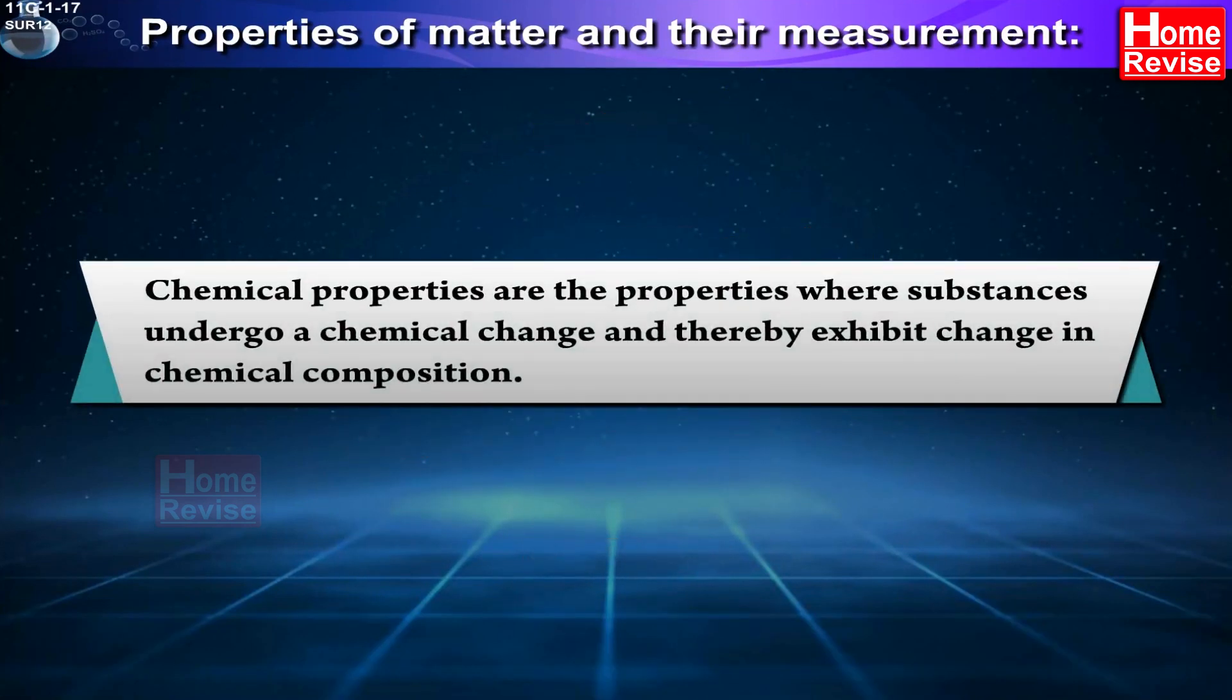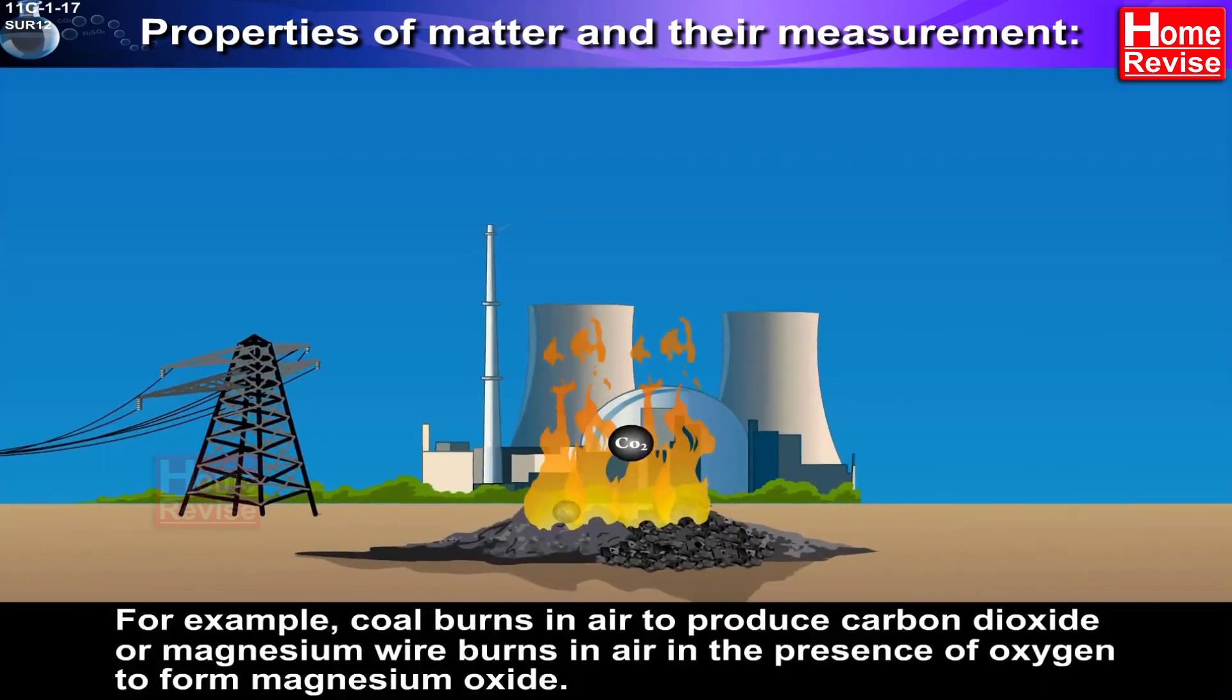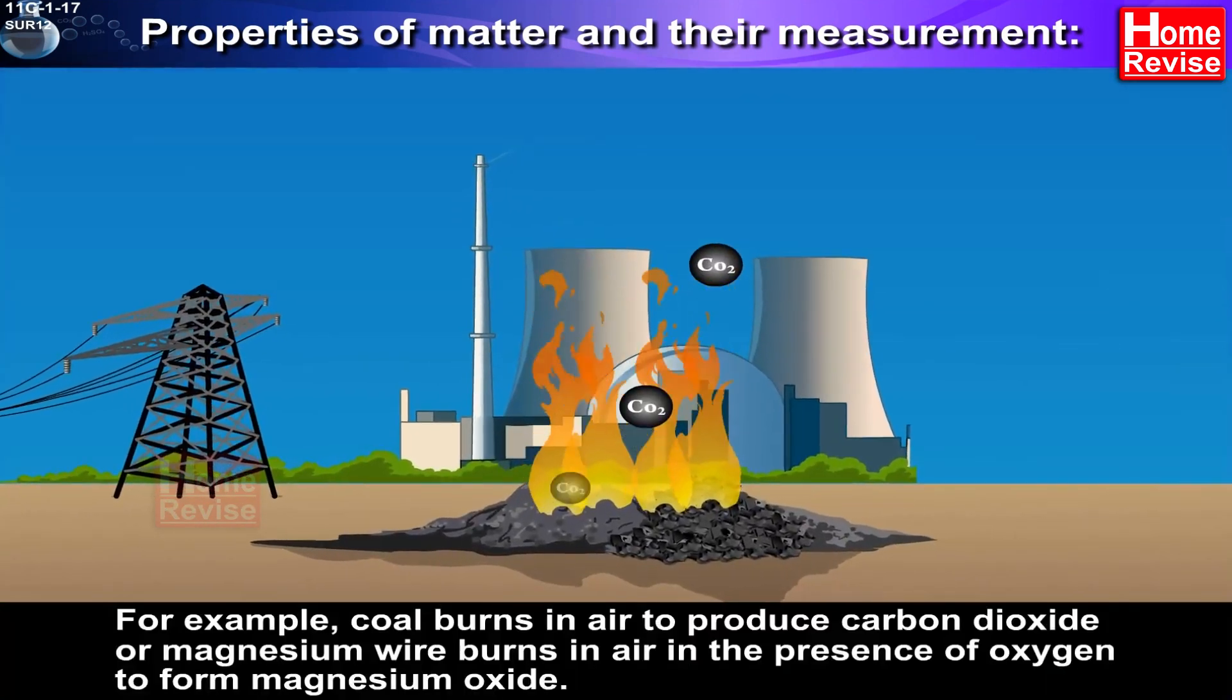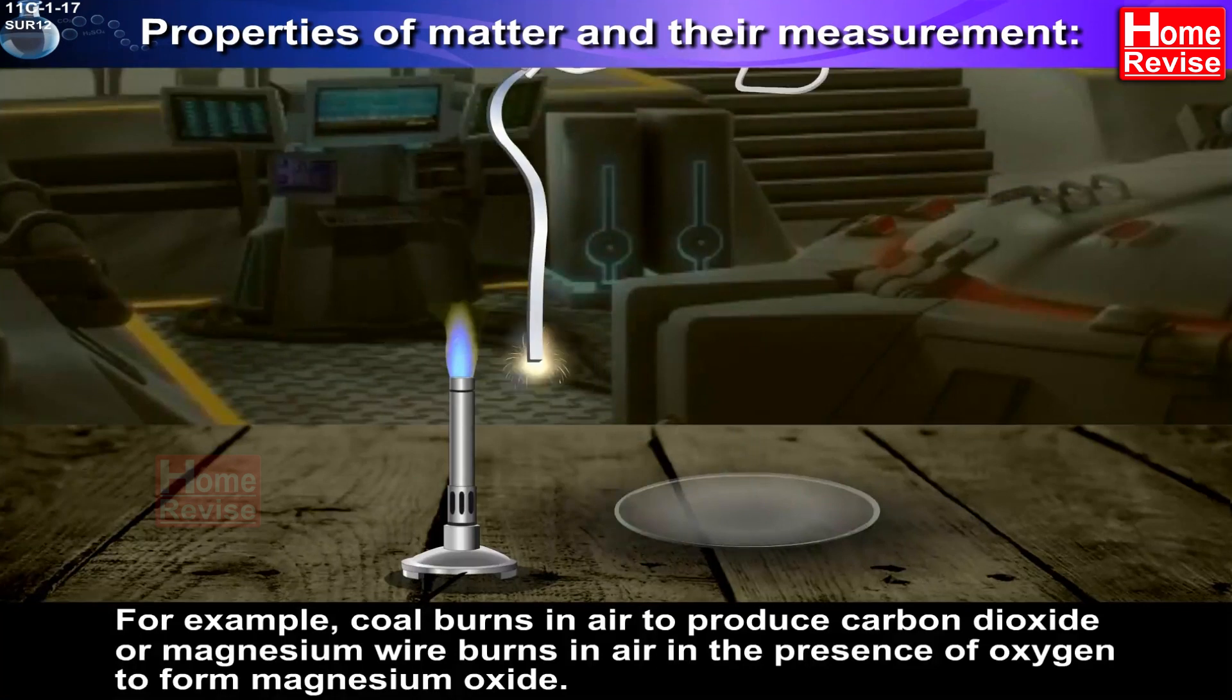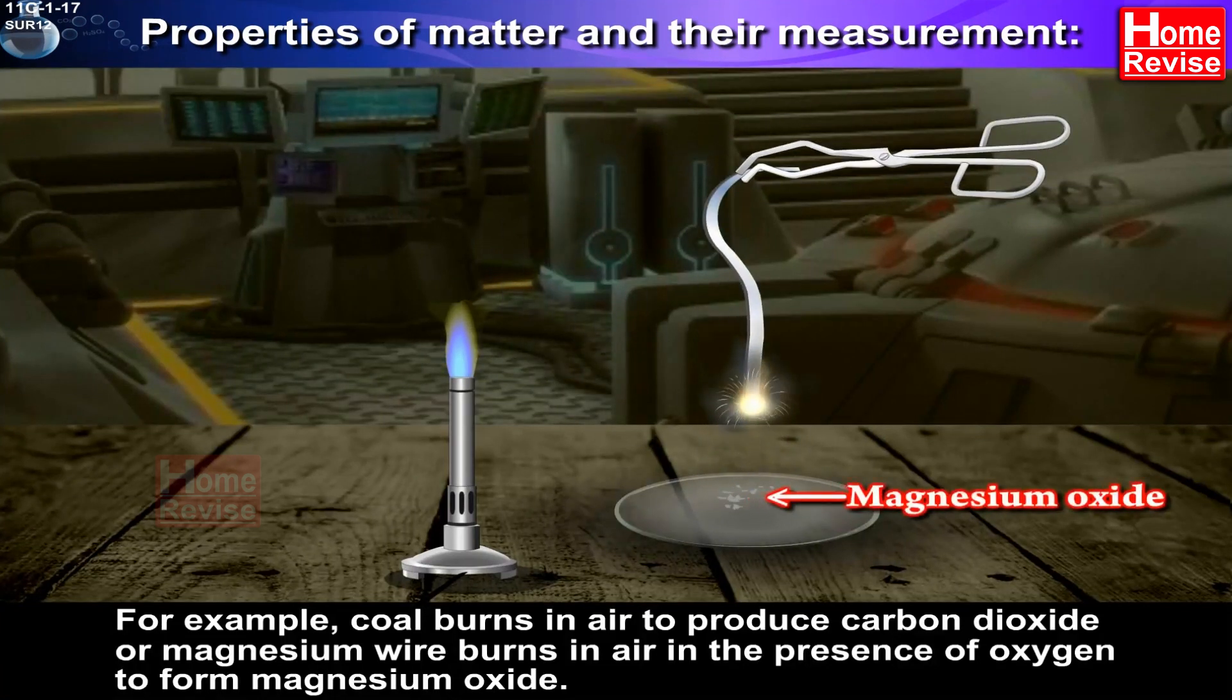Chemical properties are the properties where substances undergo a chemical change and thereby exhibit change in chemical composition. For example, coal burns in air to produce carbon dioxide, or magnesium wire burns in air in the presence of oxygen to form magnesium oxide.